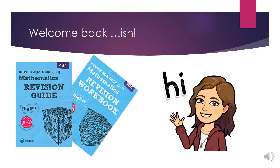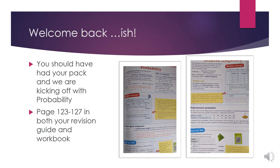So I'm looking after the higher groups, so obviously both groups should have got your revision guide and workbook in the post this week, and I'll be setting work from that. We'll be kicking off with probability, which was one of the things sent in your work packs, but this will give you the chance to do a little bit more work, a little bit more revision, and access some exam questions as well. It's pages 123 to 127 in both your revision guide and workbook, so you should be able to work with those side by side.